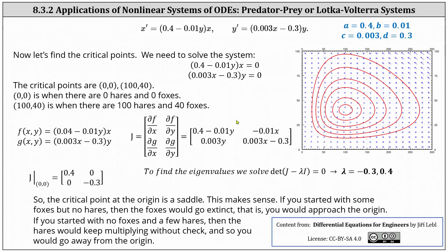Going back to our specific system, let's determine the critical points, classify them, and also determine the equation of the trajectories. To find the critical points, we need to determine the ordered pairs where both x prime and y prime are equal to zero. Notice both equations are satisfied when x and y are both zero. The system is also satisfied when x is 100 and y is 40, giving us a second critical point of (100, 40).